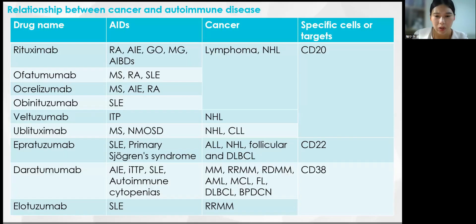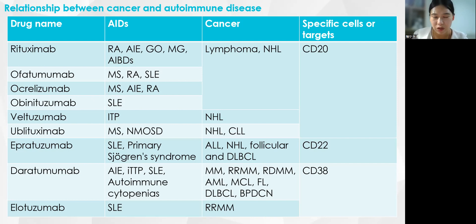The following table summarizes antibody therapies with bidirectional therapeutic effects. It was found that the reason these drugs can have therapeutic effects on both cancer and autoimmune diseases is probably because these diseases share the same target. Along this line of thought, we can look for common targets and corresponding drugs for both types of diseases. Existing drugs shown to be effective only for cancer or autoimmune diseases may also be effective for the other disease if it shares the same target.